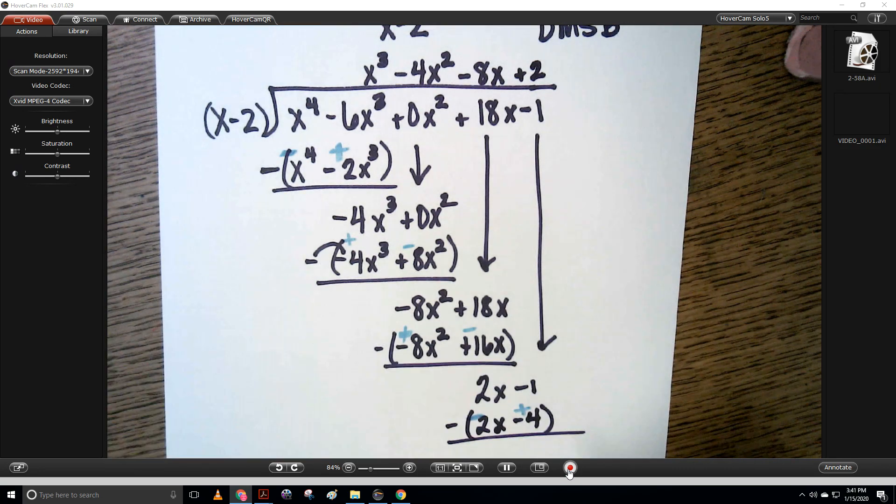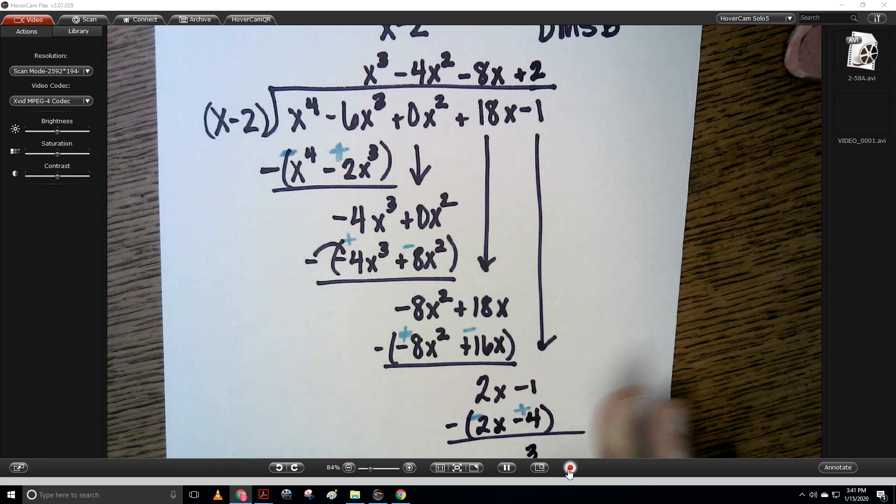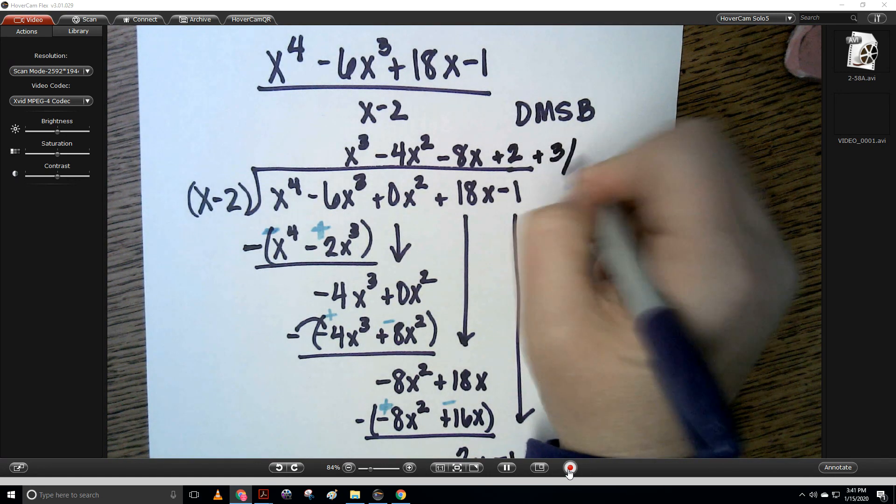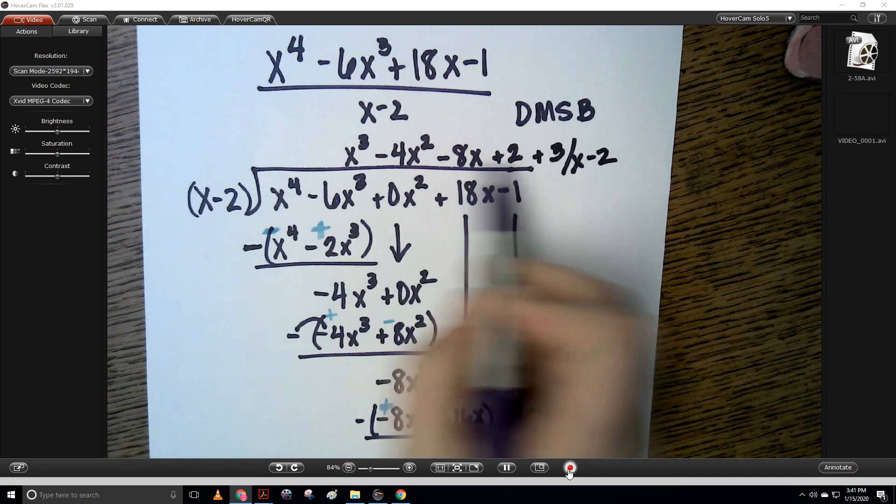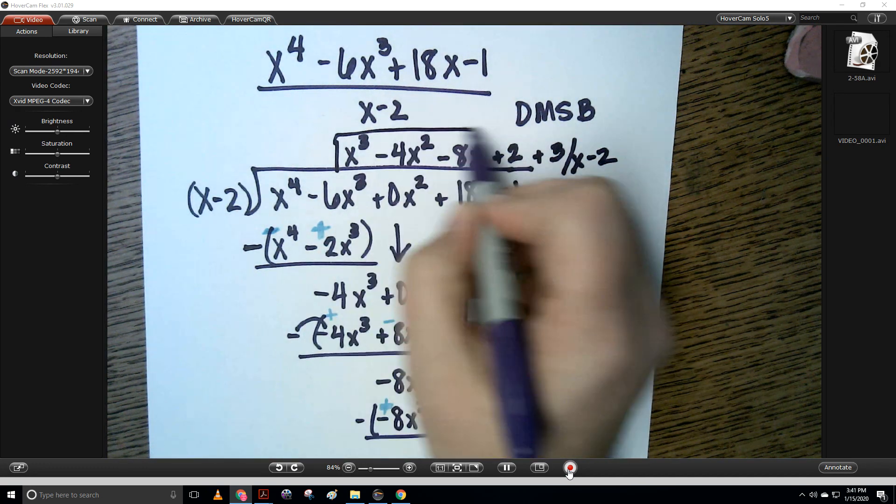So when I do that, I get 3. That's my remainder. So I go plus 3 over x minus 2. And my answer is right here.